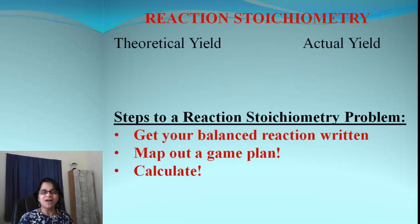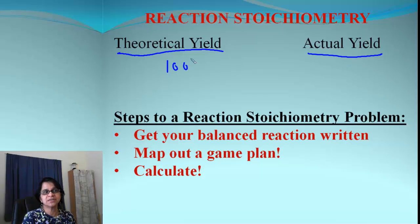Moving on to reaction stoichiometry and how it leads to something which we call percent yield. But before that, let's find out what do we mean by theoretical yield and actual yield. In theory, we should be getting 100% yield. It doesn't happen. There are always some drawbacks.